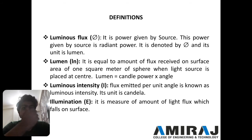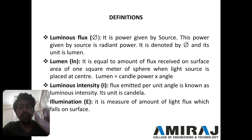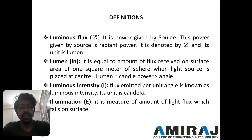Some basic definitions: First one is luminous flux. It is the power given by the source, in the form of radiant power. The amount of power given by the source is known as luminous flux. It is denoted by phi and its unit is lumen.